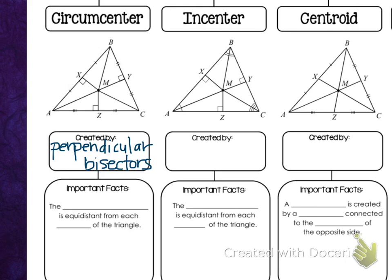The circumcenter is created by the perpendicular bisector. 'Bisect' means cuts in half, and it is also perpendicular. Our perpendicular bisectors are these three segments in the middle. On each side, they cut that segment in half — we have the two congruent marks to show that. Perpendicular bisector MY is cutting BC in half, XM is cutting AB in half, and MZ is cutting AC in half.